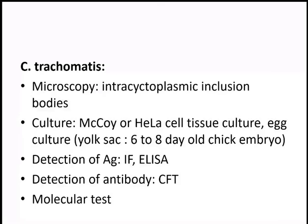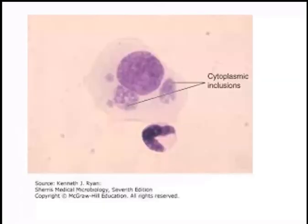Antibody detection is another method — IgM antibodies appear first, followed later by IgG antibodies, commonly detected by complement fixation test. Microscopic examination to detect intracytoplasmic inclusion bodies is a key diagnostic step. If inclusion bodies are found in the smear using Giemsa stain, infection due to chlamydia trachomatis is confirmed. If gonococci are absent and these structures are visible, the infection is probably due to chlamydia trachomatis.